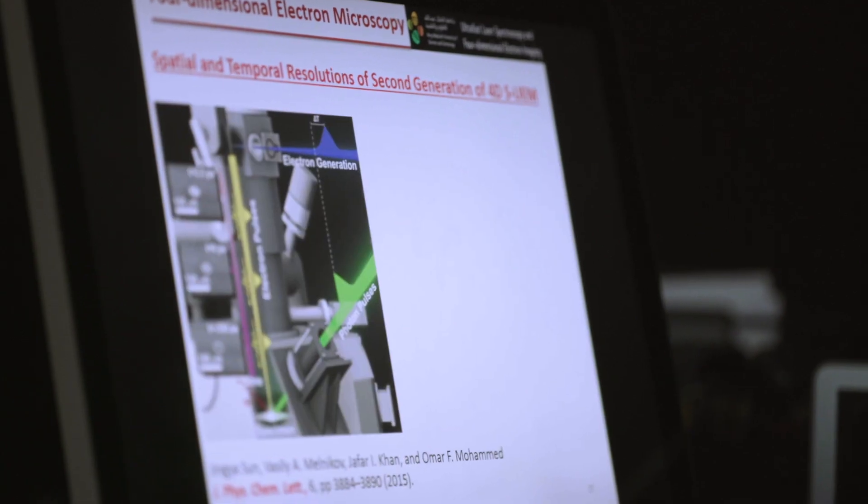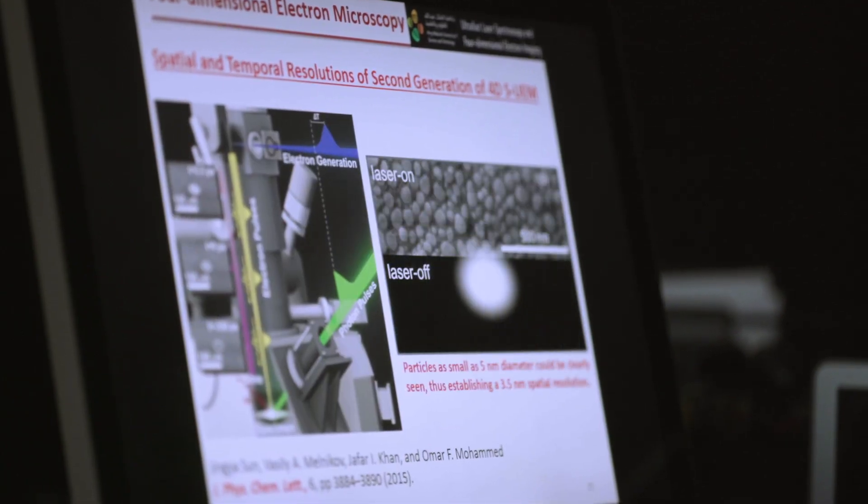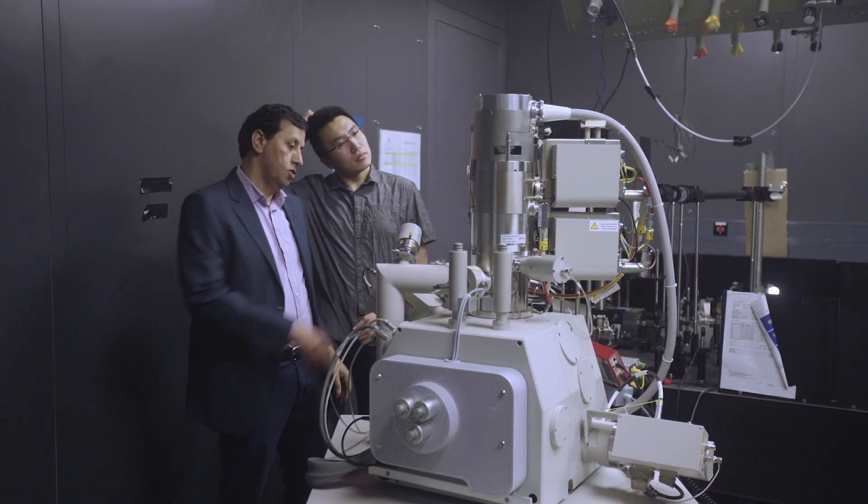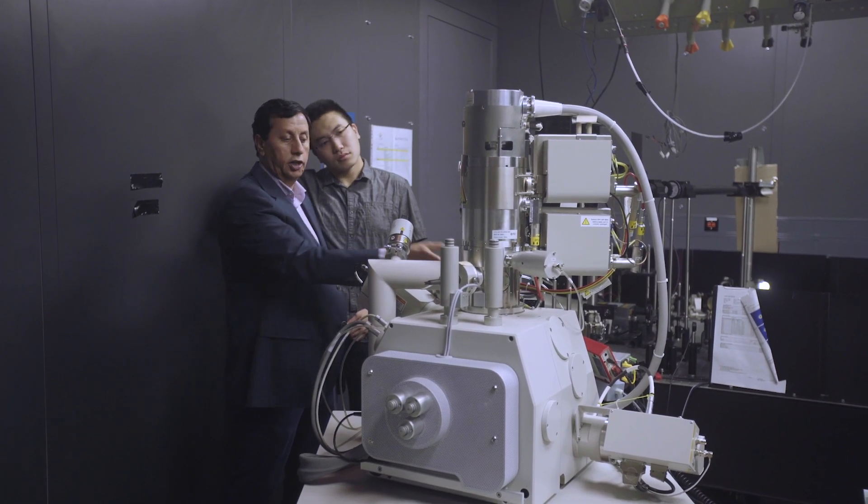And here at KAUST, in fact, we have the second generation of 4D electron microscopy in scanning mode. The first generation we built at Caltech in the U.S., and here at KAUST we built the second generation with the best capabilities so far.